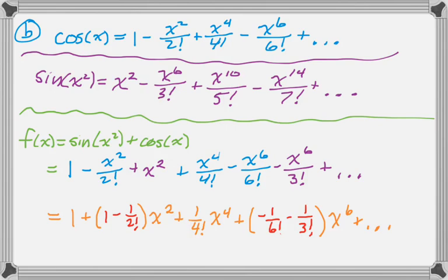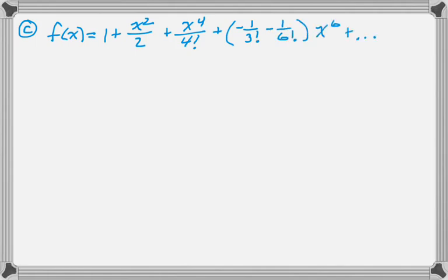So f of x is really 1 plus 1 half of x squared plus x to the 4th over 4 factorial plus negative 1 over 3 factorial minus 1 over 6 factorial x to the 6th. And what we're supposed to do here is find the 6th derivative at 0. You can tell by looking at the series that it's actually centered at 0, so we can actually do this.